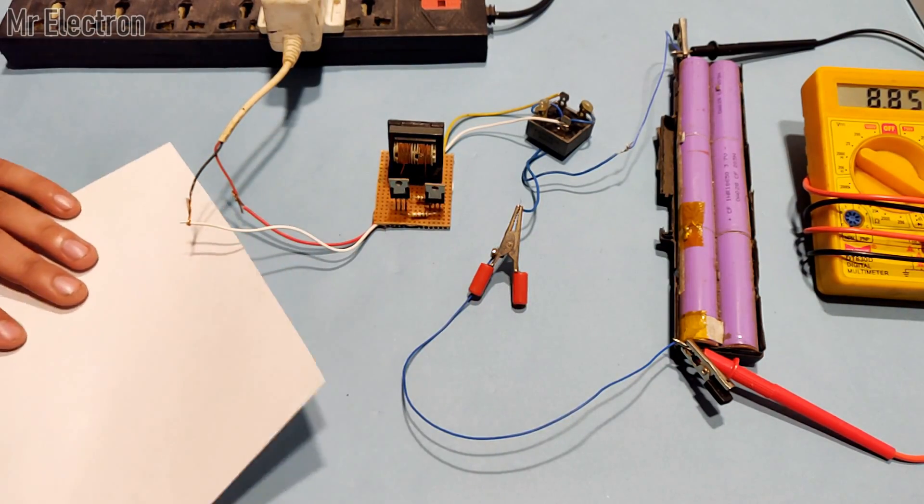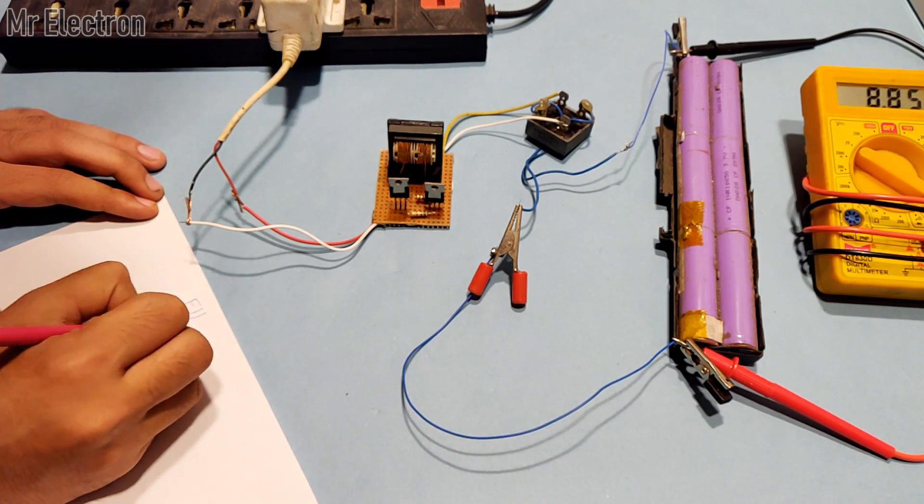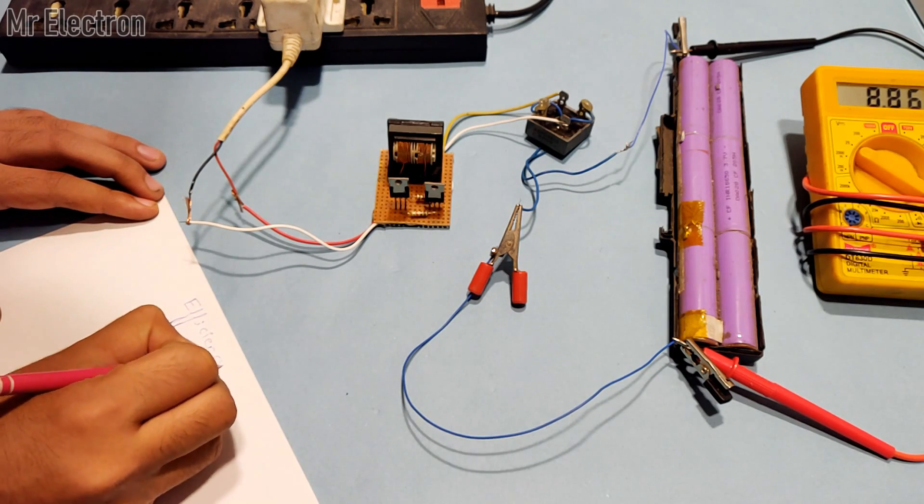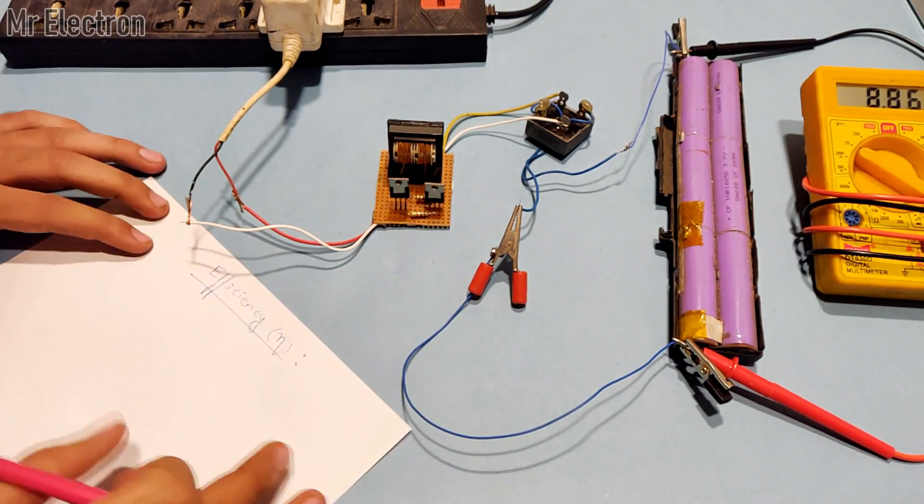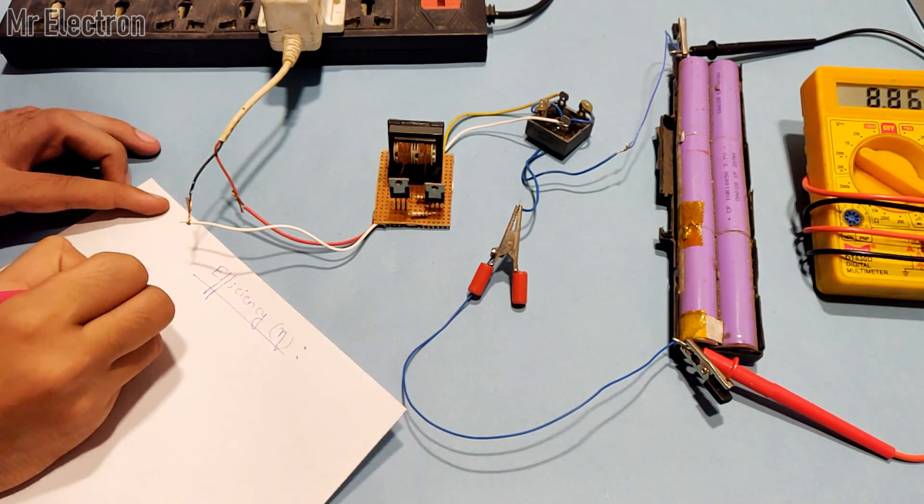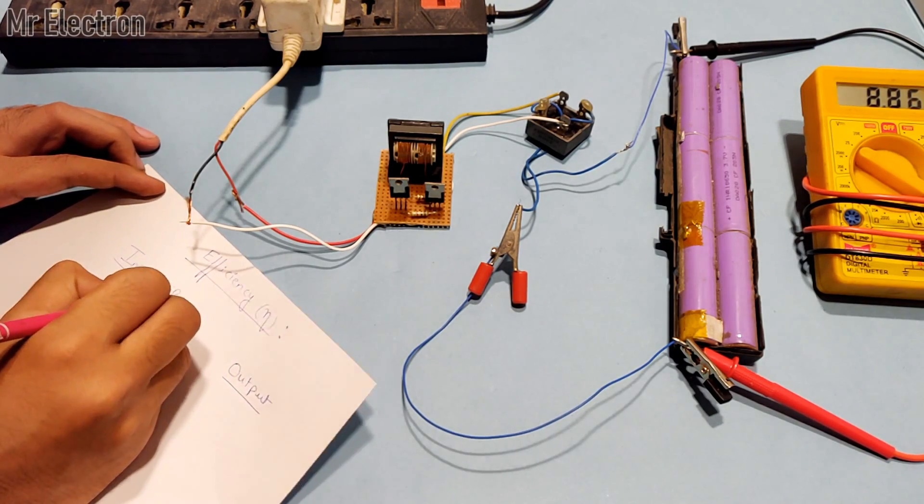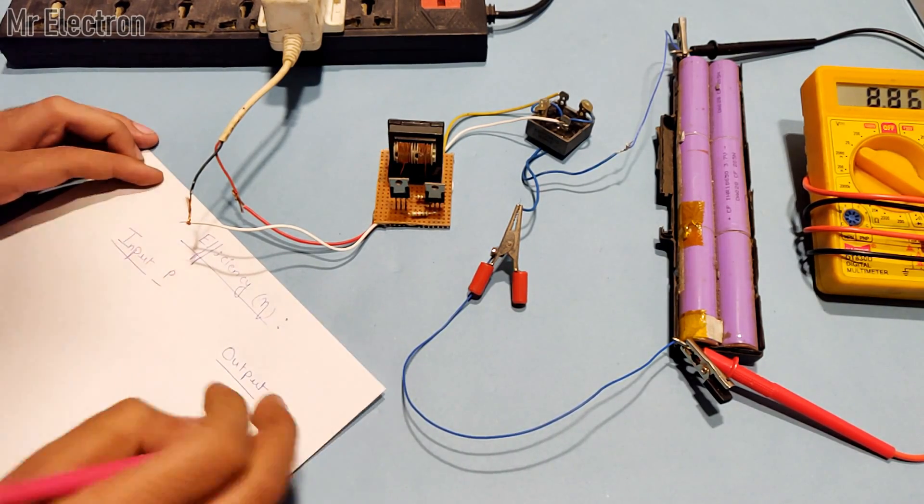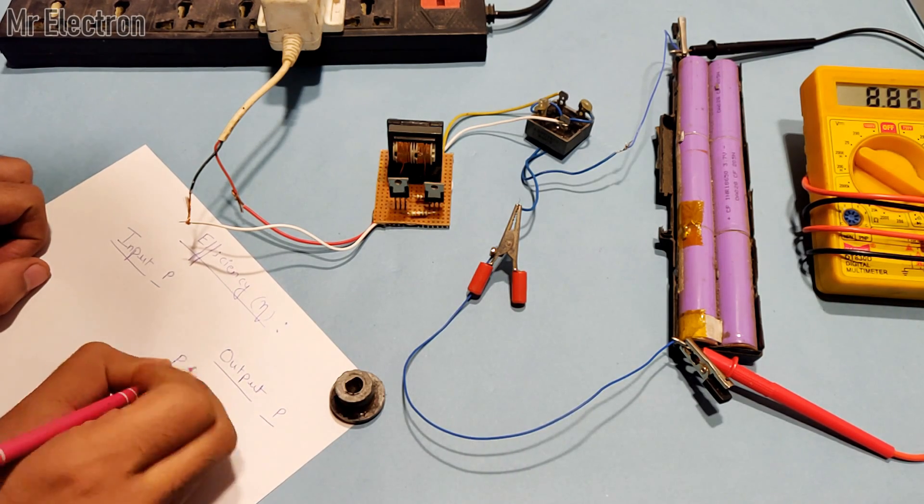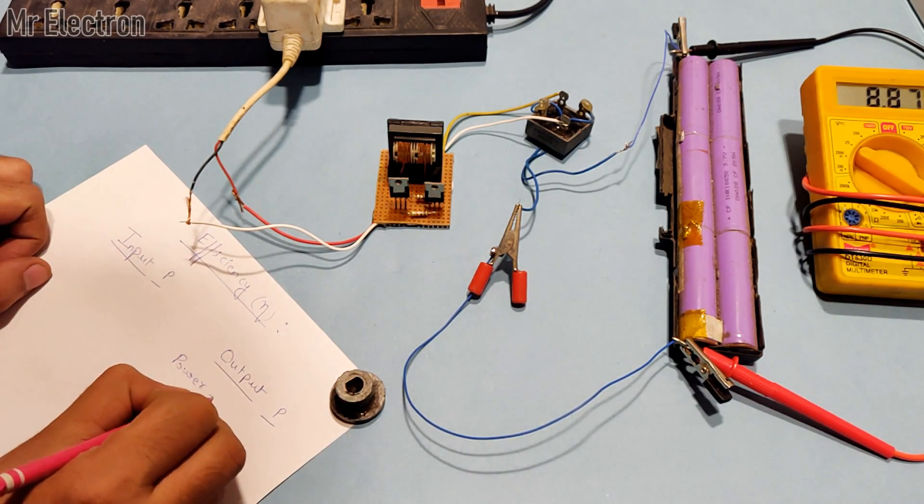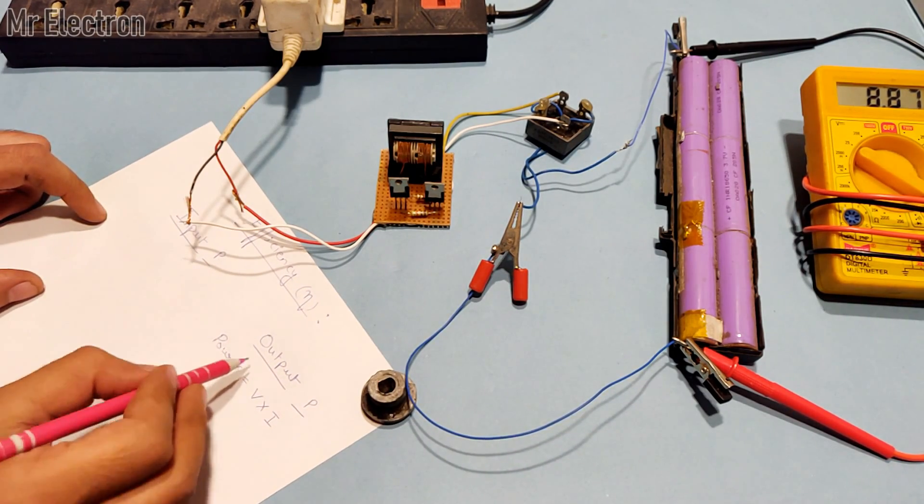Now the efficiency calculation of the circuit is what I'm going to do. Efficiency is indicated by the term eta and is equal to output power upon input power. In percentage it will be multiplied by 100. We already have the voltage across the battery which is 8.87 volts, so we have to multiply that voltage with the current that the circuit is feeding the battery.